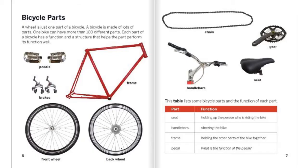Bicycle parts. A wheel is just one part of a bicycle. A bicycle is made of lots of parts. One bike can have more than a hundred different parts. Each part of a bicycle has a function and a structure that helps the part perform its function well.